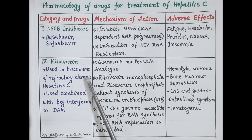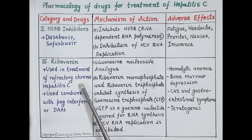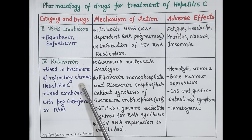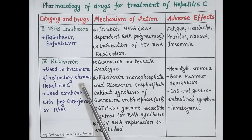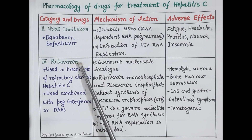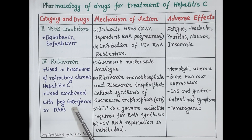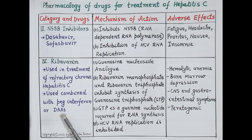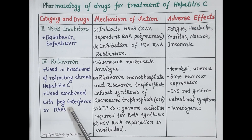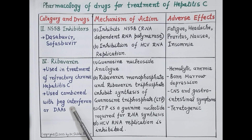Ribavirin is used for the treatment of refractory chronic hepatitis C — that is, hepatitis C that does not respond to direct-acting antiviral drugs — and for recurrent cases of hepatitis C. Ribavirin is used in combination with pegylated interferon alpha or direct-acting antiviral drugs. Pegylated interferon alpha is interferon alpha complexed with polyethylene glycol, which produces sustained antiviral effects.